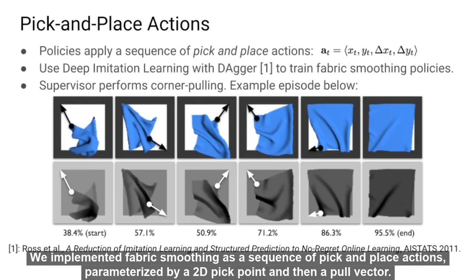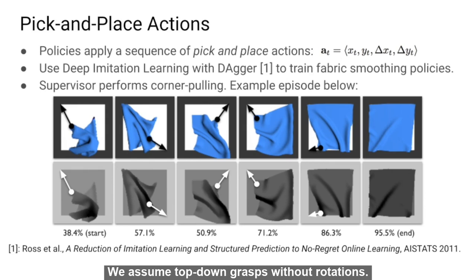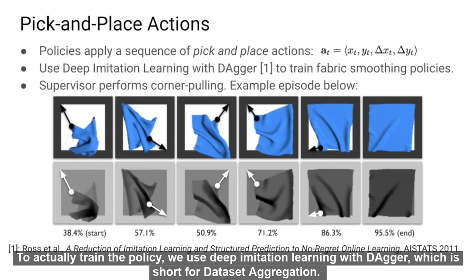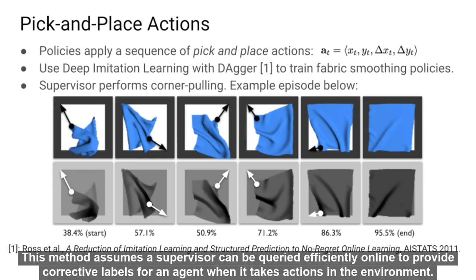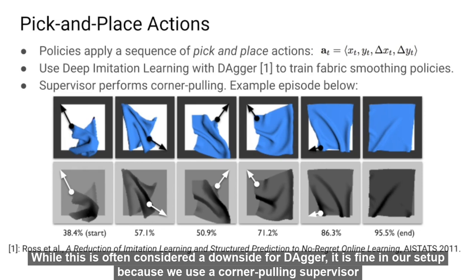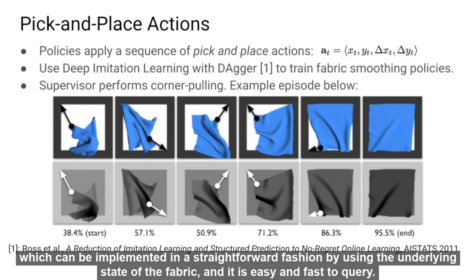We implemented fabric smoothing as a sequence of pick and place actions parameterized by a 2D pick point and a pull vector, assuming top-down grasps without rotation. To actually train the policy, we use deep imitation learning with DAGGER, short for dataset aggregation. This method assumes a supervisor can be queried efficiently online to provide corrective labels for an agent when it takes action in the environment. While this is often considered a downside for DAGGER, it is fine in our setup because we use a corner pulling supervisor which can be implemented in a straightforward fashion using the underlying state of the fabric and is easy and fast to query.